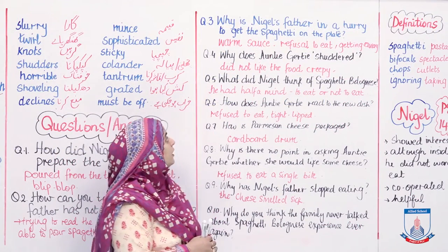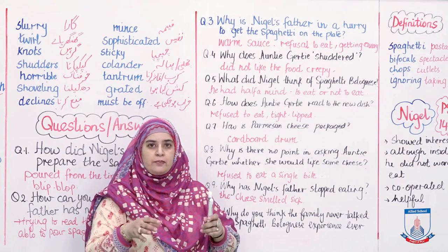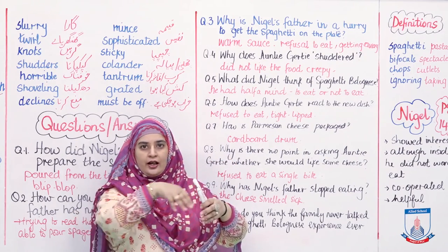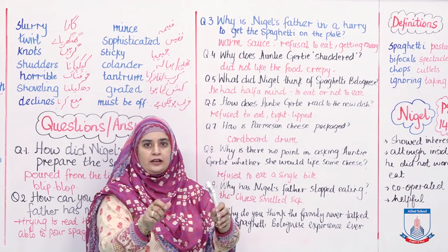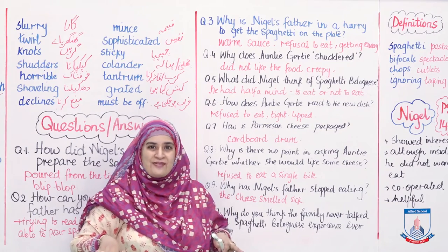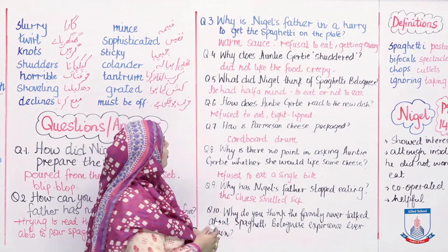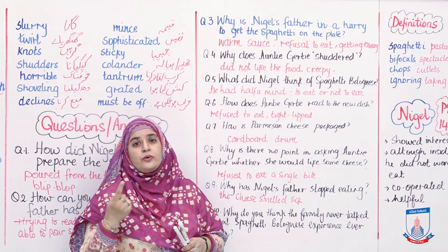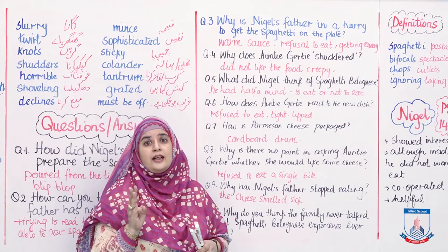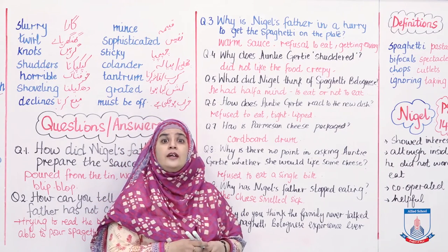Why is Nigel's father in a hurry to get the spaghetti on the plate? When he poured it on the colander, since it was the first time for his father, he did not know how to handle it. He thought the spaghetti was ready and if he did not put it on the plate, the spaghetti will go down into the drain. One reason was it was warm in the sauce. Second, the spaghetti would go down the drain. Third, the family comprising of Aunt Jerty, Mum and Nigel Slater would refuse to eat the spaghetti if he delayed the process. Already half an hour unko spaghetti boil karne mein ho gaya tha.